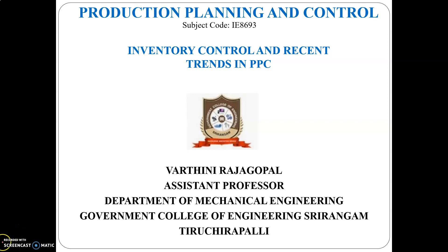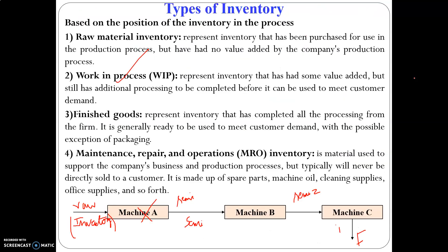Welcome back. We have been discussing different types of inventory. Based on the position of the inventory, we have seen the first three types: raw material inventory, work-in-process inventory, and finished goods. The last one is the maintenance, repair, and operation inventory.